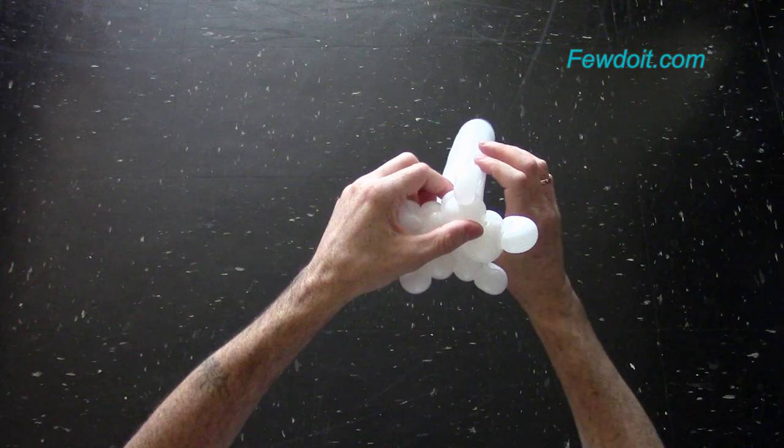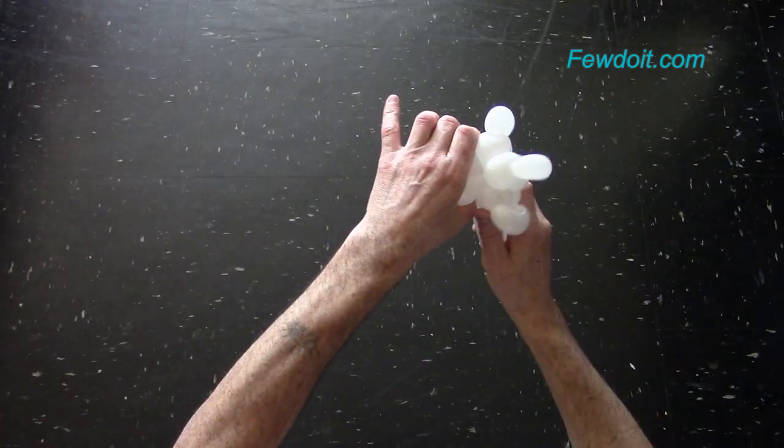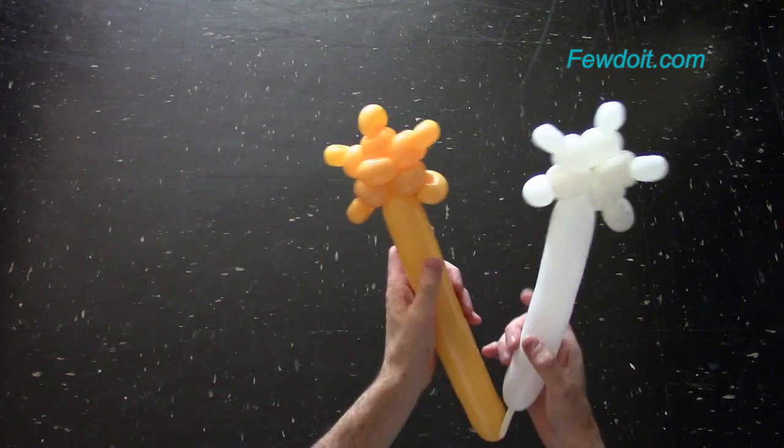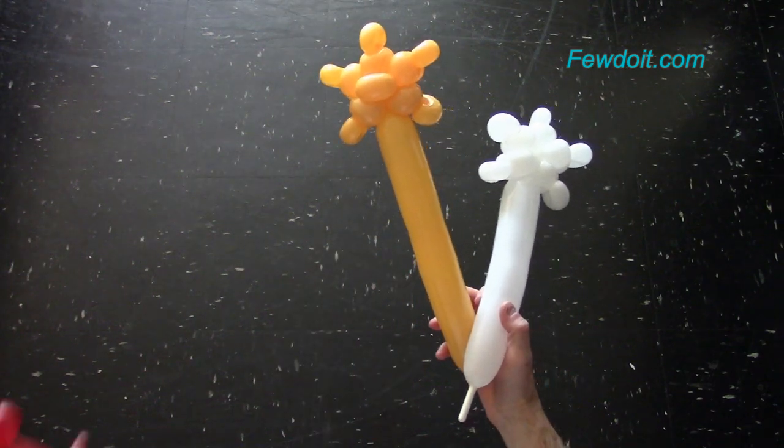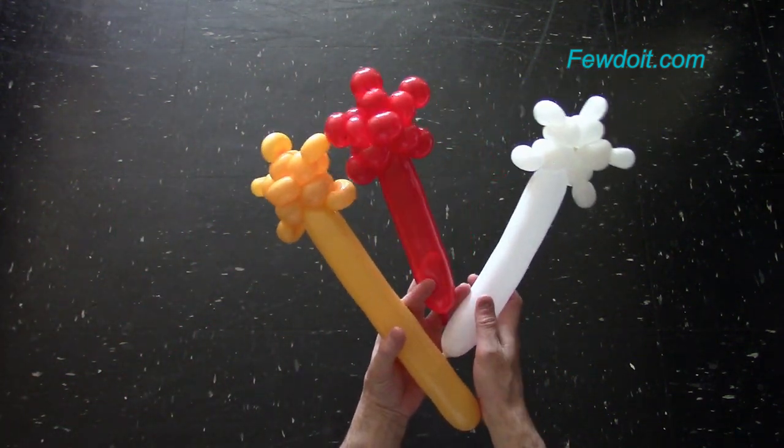Congratulations, we have made one balloon snowflake. You can cut off the rest of the balloon and tie off the end or we can leave the rest of the balloon and use the sculpture as a magic wand for the princess. I'm going to use one of the stars for the Christmas tree.